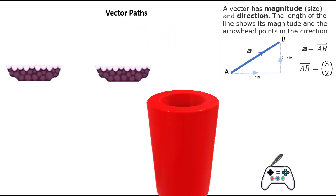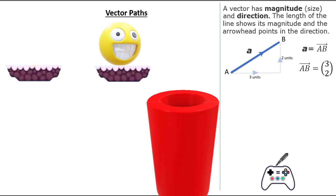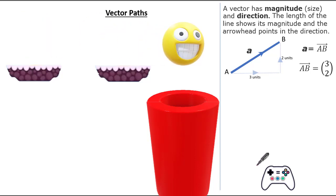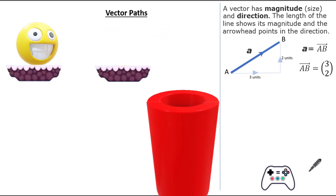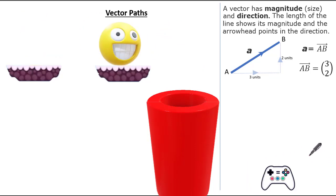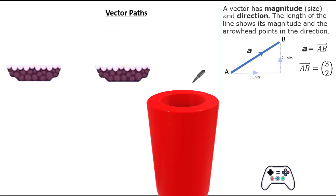Each button performs a motion outlined by the vector: left, right, up, down. This action can be applied anywhere in the game, just like a vector. A vector can exist anywhere in a 2D or 3D plane as it will always have a fixed magnitude and direction.